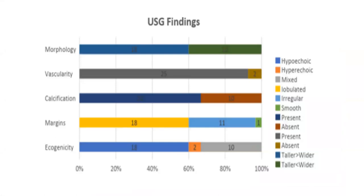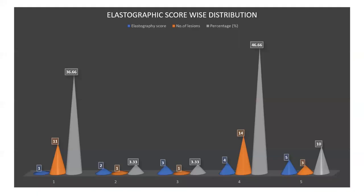Regarding USG findings: most lesions were hypoechoic, comprising 60% of the study group, 10 lesions had mixed echogenicity, and two lesions were anechoic. Eleven lesions had lobulated margins, 18 had irregular margins, and only two had smooth margins. Calcification was seen in 20 cases (66%), and absent in 10. Vascularity was demonstrated in 25 out of 30 lesions (83.3%). Lesions with morphology wider than taller were seen in 40% of the study group, while 60% showed taller than wider morphology, suggesting malignancy. The elastographic score distribution showed that the maximum number of lesions had an elastographic score of 4, comprising 46.6% of the study population, with the second most common being score 1, seen in 36%.